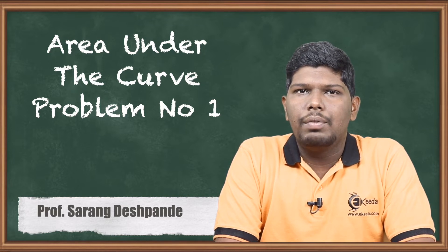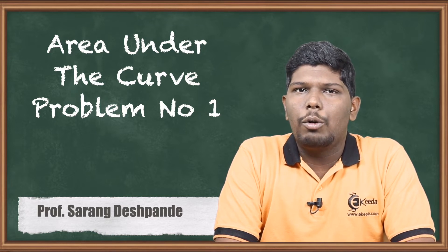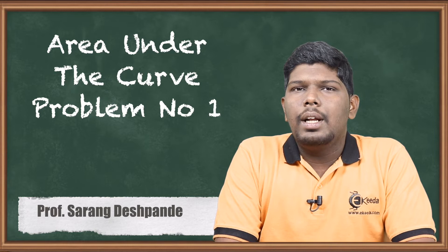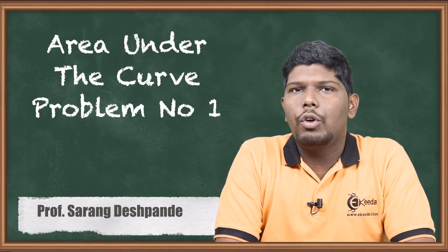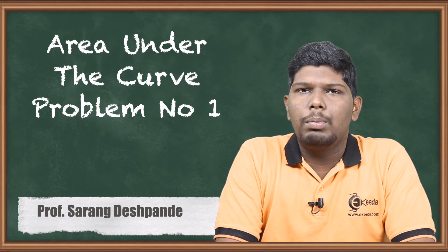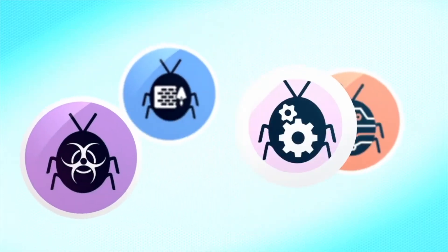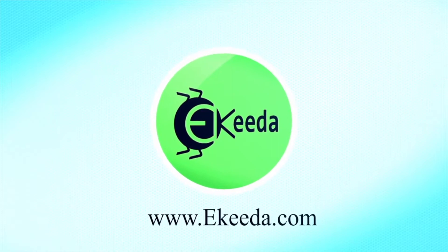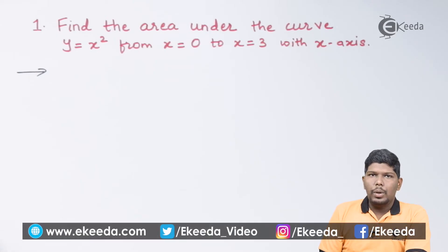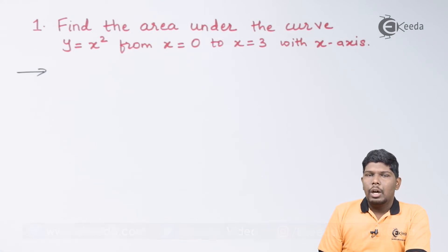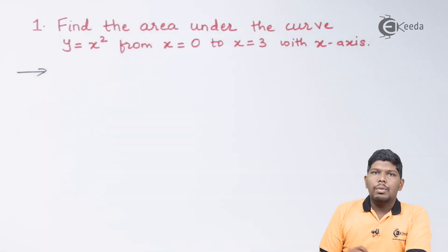If we have a curve and the question asks to find area with respect to the x-axis, we use the formula integral y dx. Similarly, if the question asks to find area with respect to the y-axis, we use the formula integral x dy. Problem number one: find the area under the curve y = x² from x = 0 to x = 3 with the x-axis.